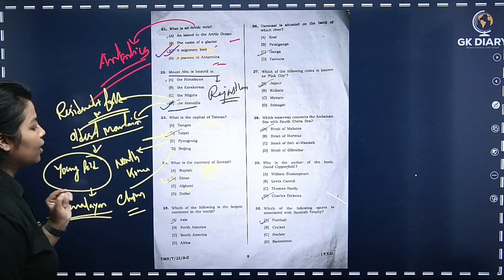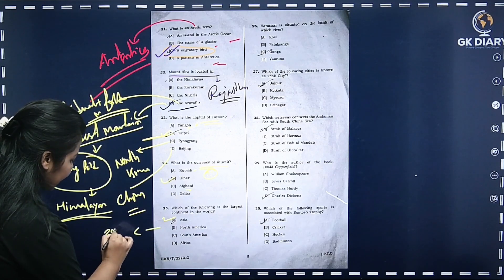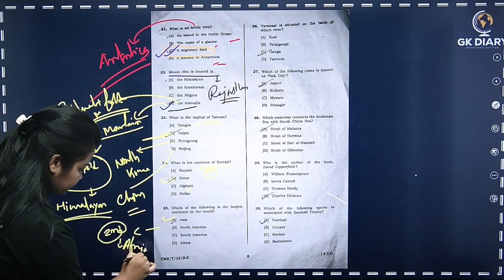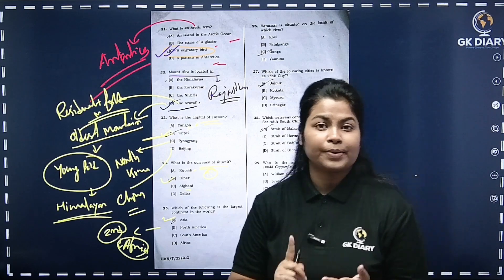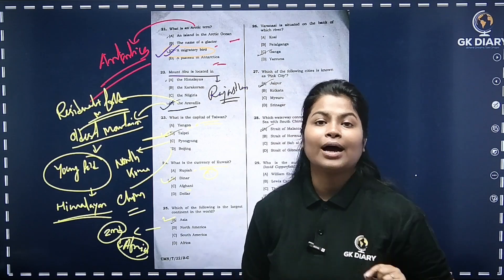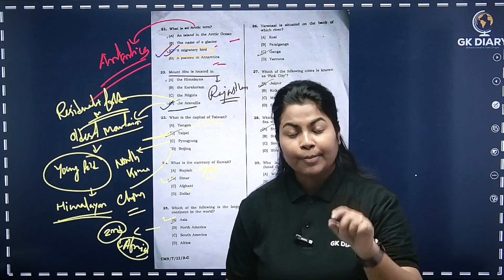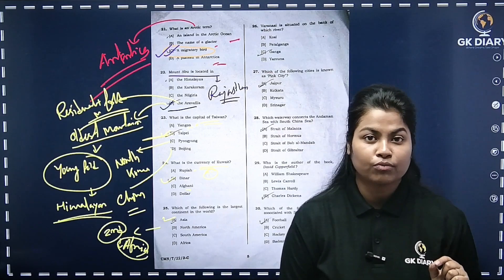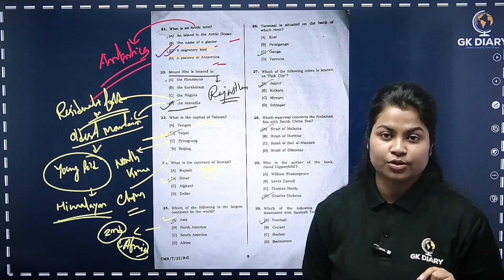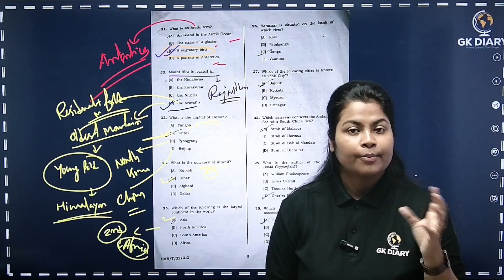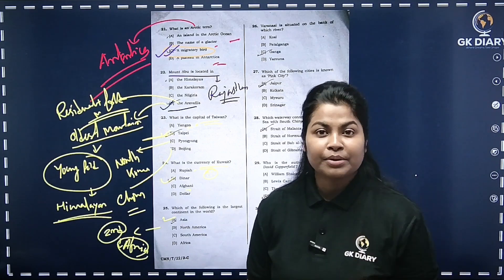Which is the largest continent in the world? It is an easy question. The second largest is Africa. Important facts about Africa: the equator, the Tropic of Cancer, and the Tropic of Capricorn all pass through the middle of Africa. Africa is called the dark continent. Antarctica is the white continent. The Pacific Ocean holds the most water.